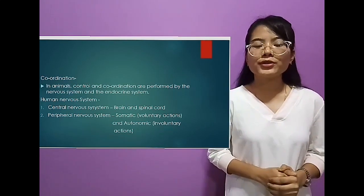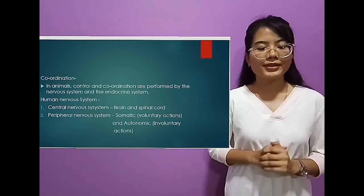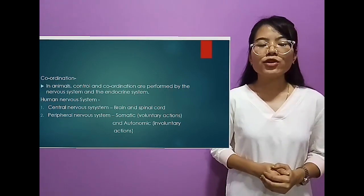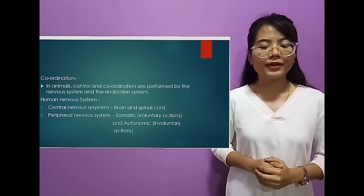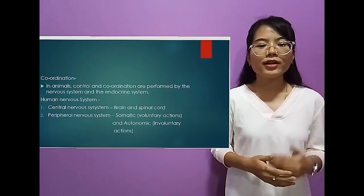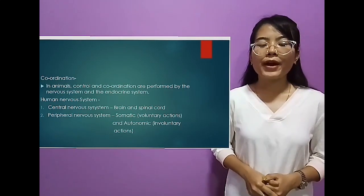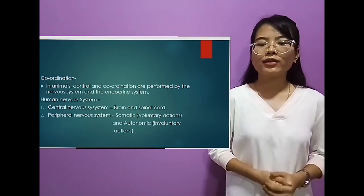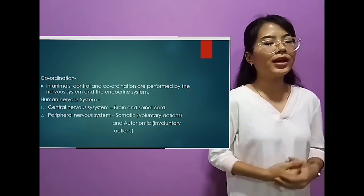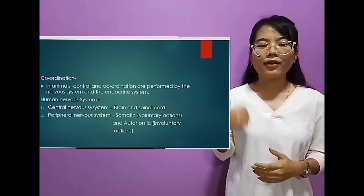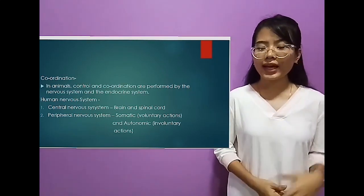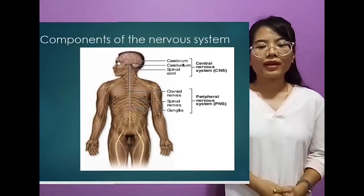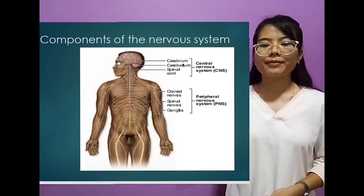First, we are going to discuss about the nervous system. The nervous system consists of two parts: the central nervous system and the peripheral nervous system. The central nervous system is divided into the brain and spinal cord. The spinal cord travels through the vertebral column present in our vertebrae at the back side of the body. I'll show you the diagram of the nervous system here.